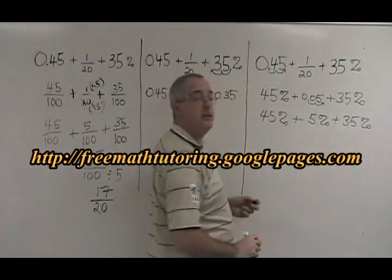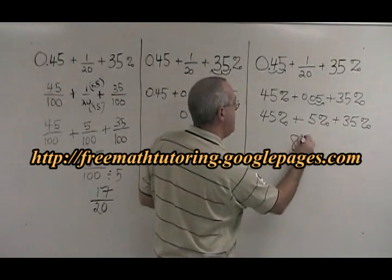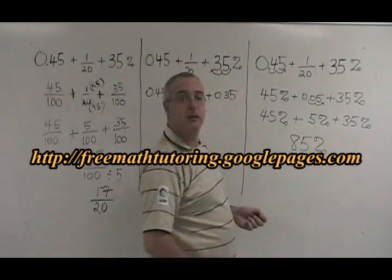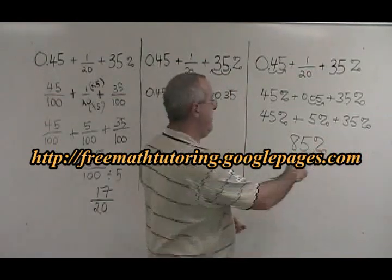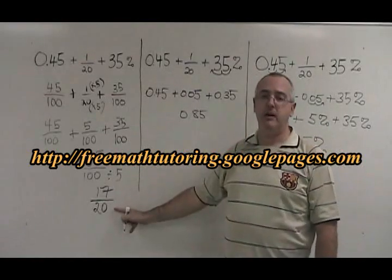Now that they're all percent, we can add them. 45 plus 5 is 50, plus 35 is 85. 85% is our answer. All three answers are equivalent. 85% is equivalent to the decimal 0.85, which is equivalent to the fraction 17 over 20.